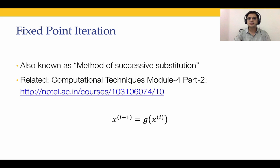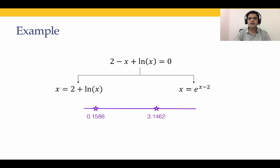This method is not guaranteed to converge under all conditions, and when it converges versus when it does not has been studied extensively. In today's lecture, we will take the example we have been working on — 2 - x + ln(x) = 0 — convert it into the form x = g(x), and see what solutions we get when we solve it in MATLAB.